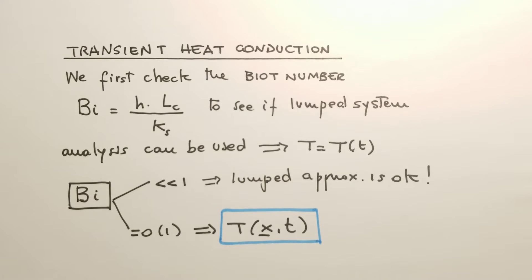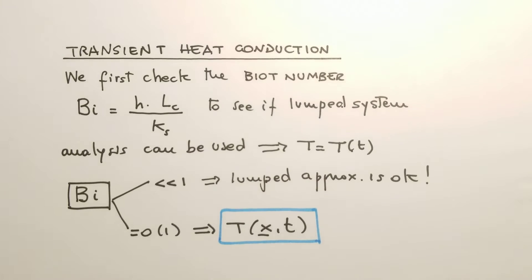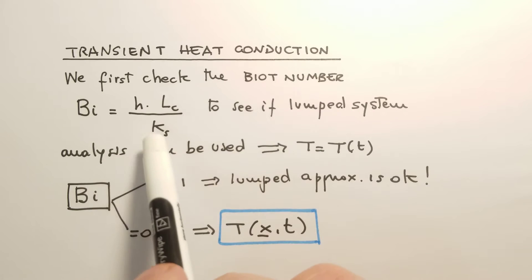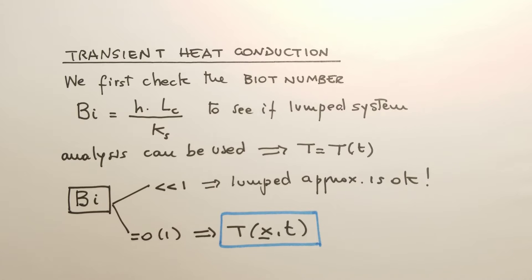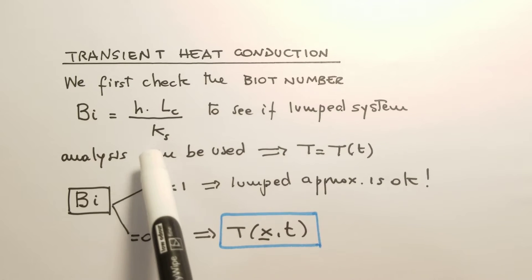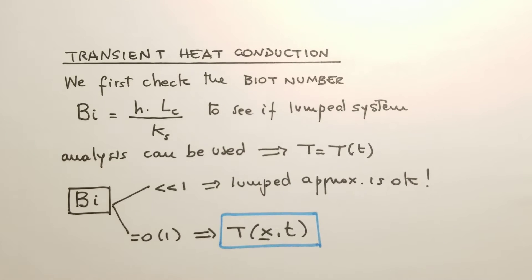Welcome to a new lesson of Thermal Fluid Science. We continue our discussion on transient heat conduction, and we recall that the first thing we have to do for this type of problems is look at the Biot number. The Biot number is the non-dimensional number defined as h times Lc divided by ks, where h is the convection coefficient, Lc is the typical length scale of the problem, and ks is the thermal conductivity of the material.